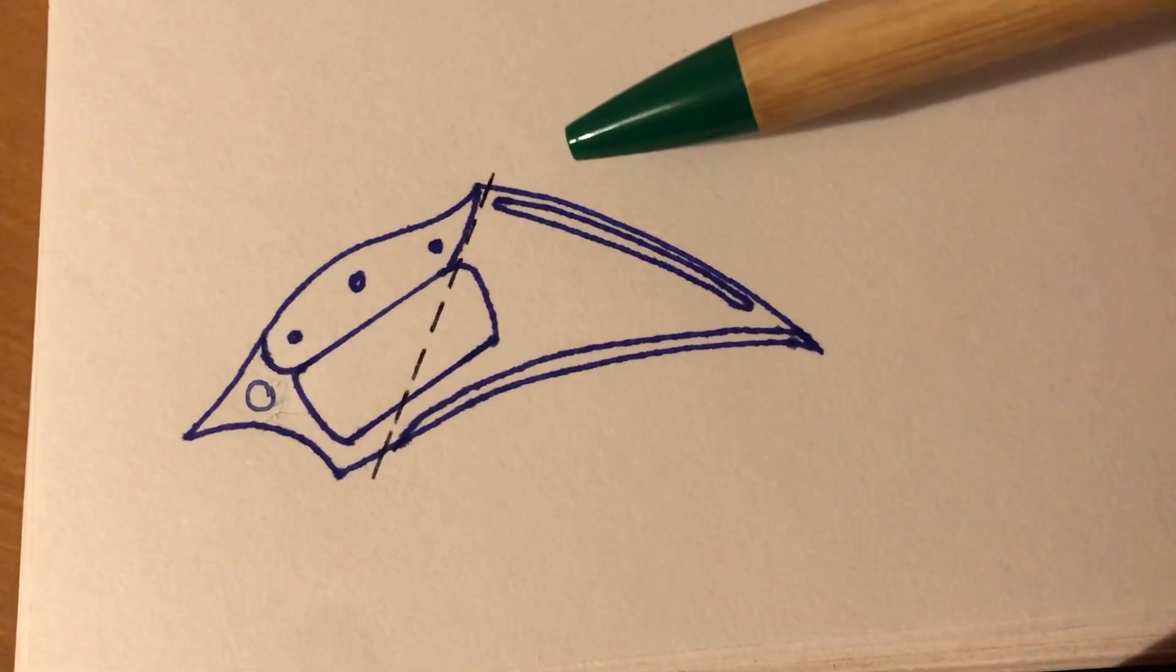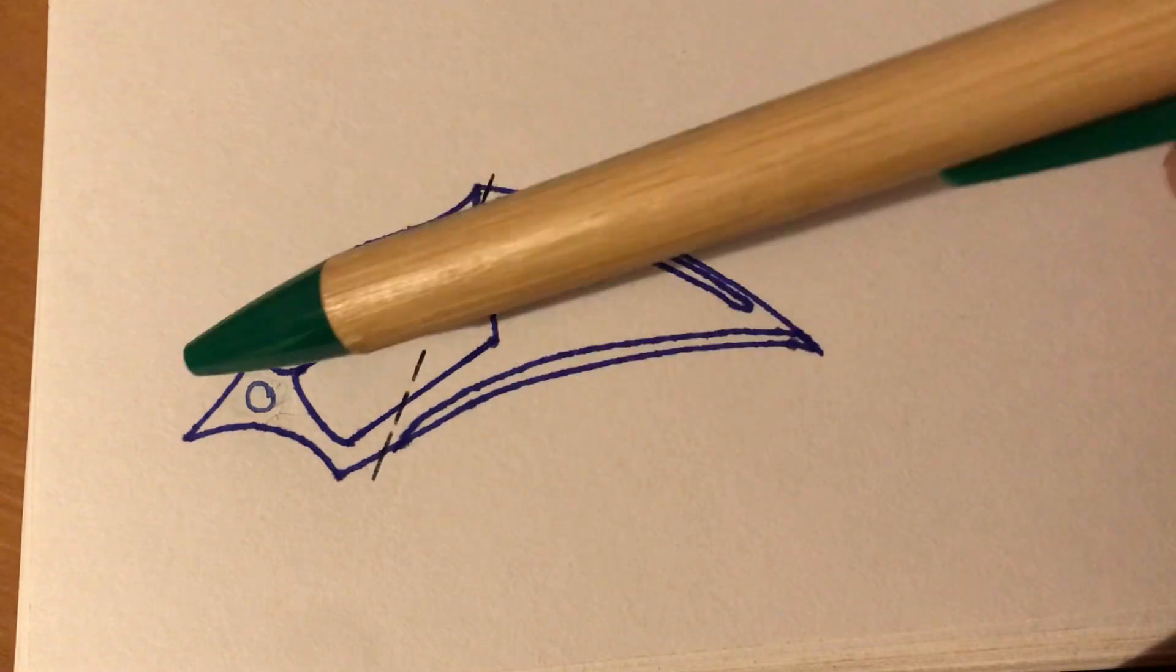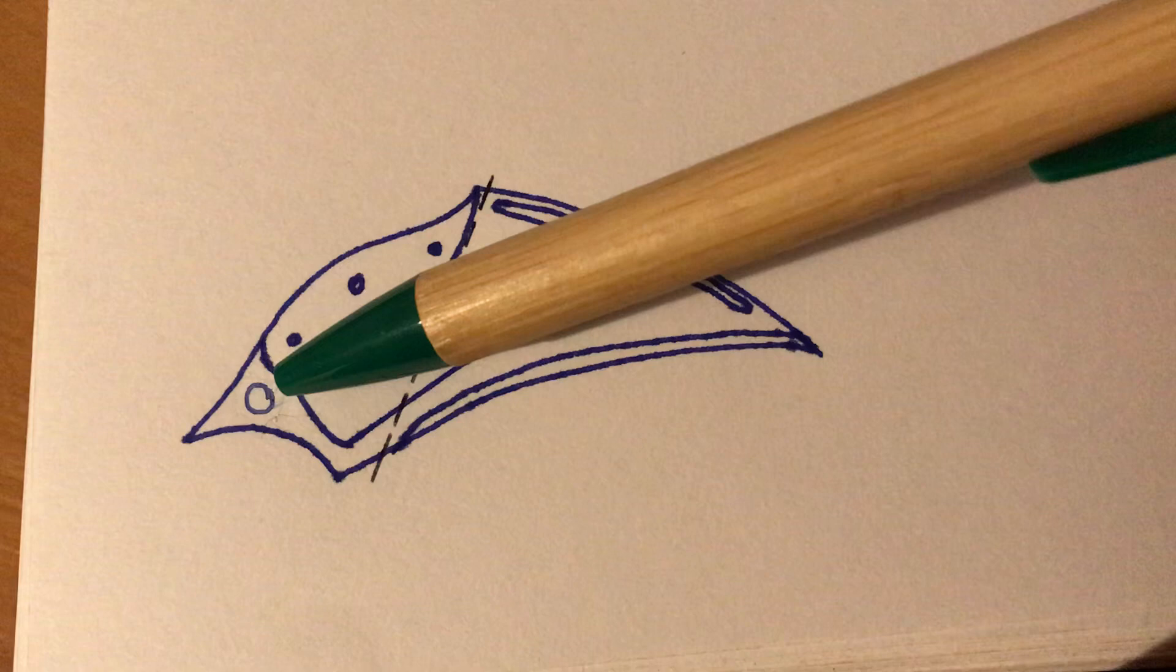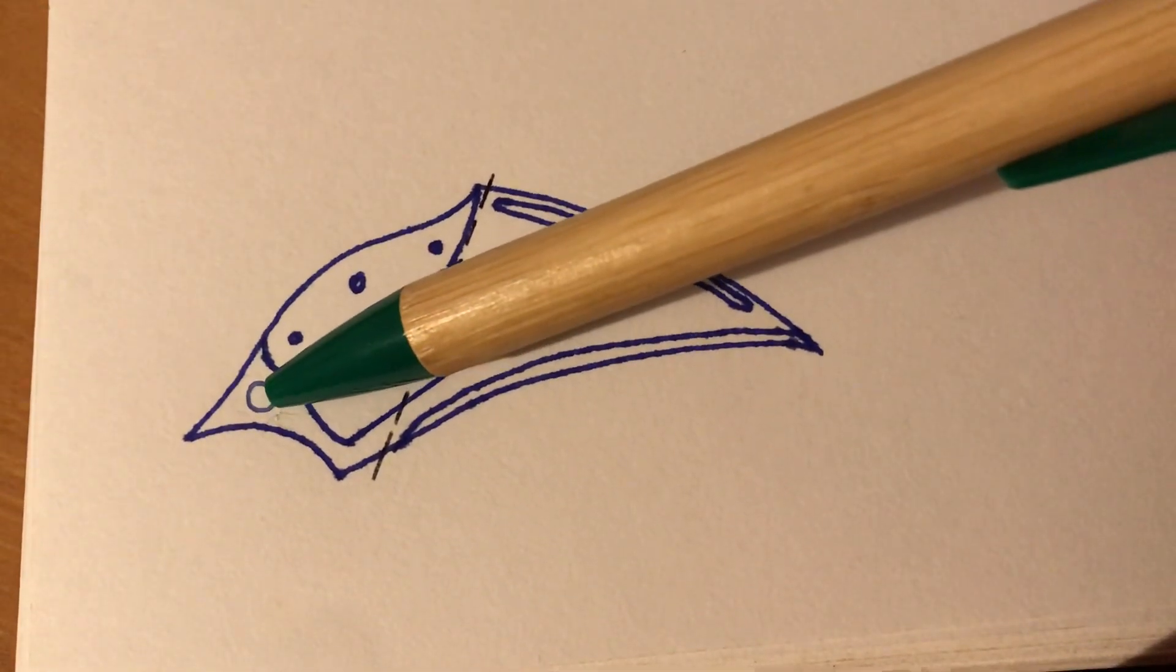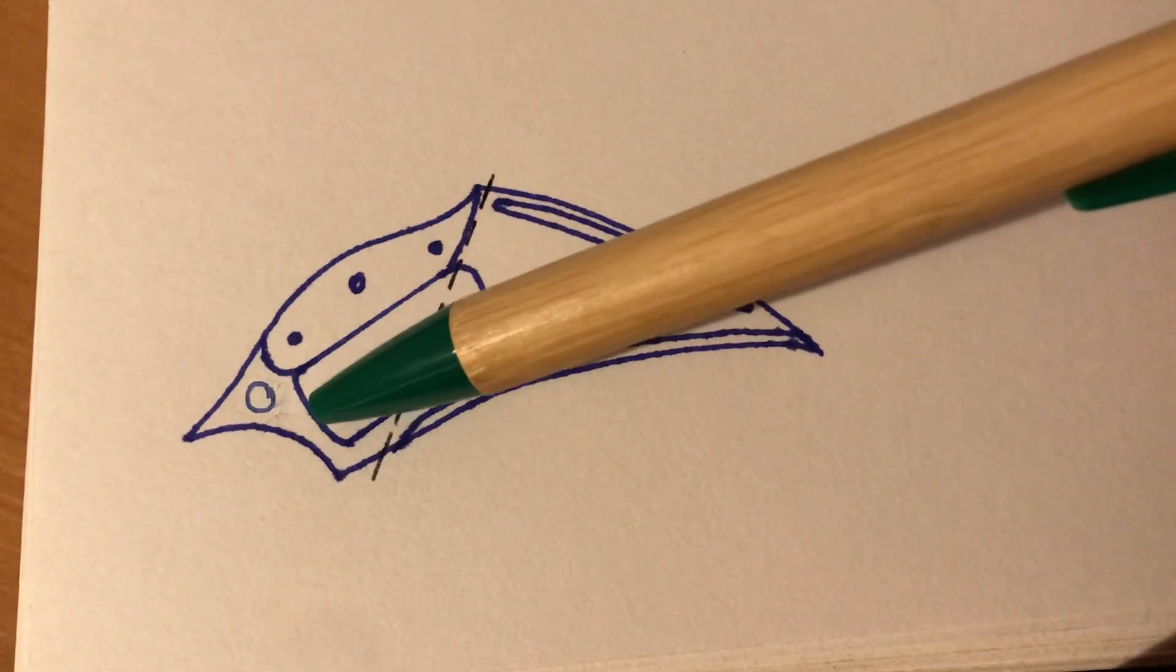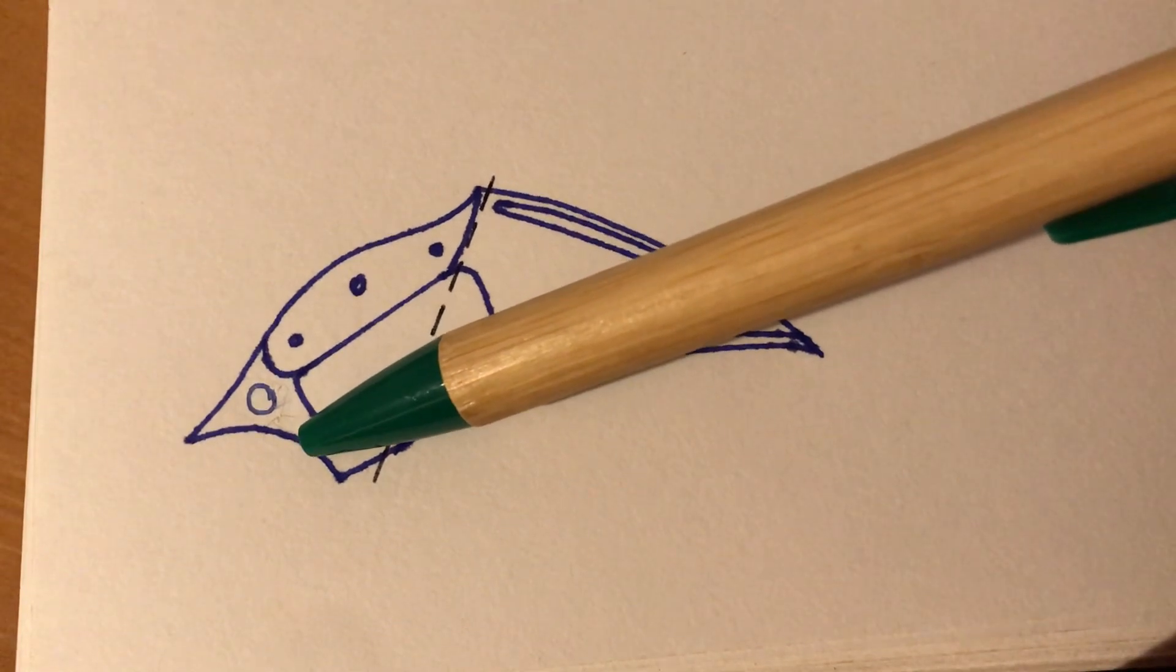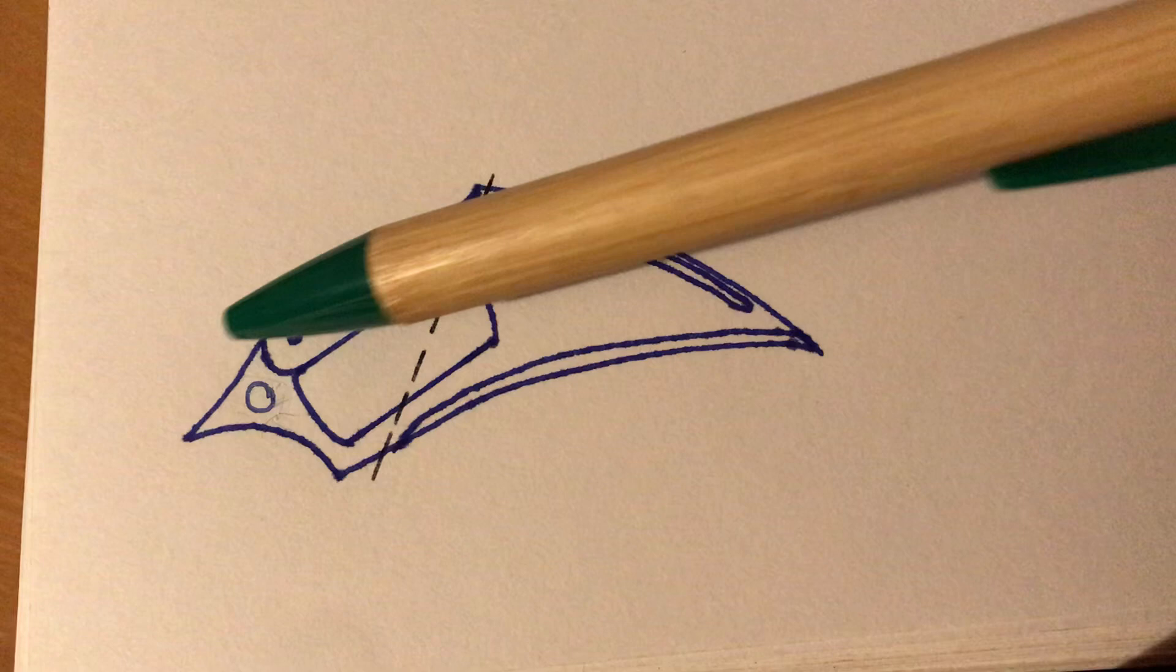And it will be great for close quarters, also because of this butt spike. So you can actually use it to punch somebody and create really nasty damages with this. Because it works in the same principle as the butt spikes or the spikes on the handles of World War I combat trench knives.